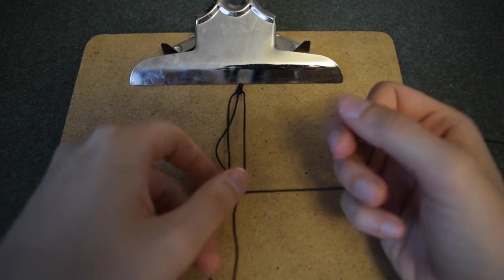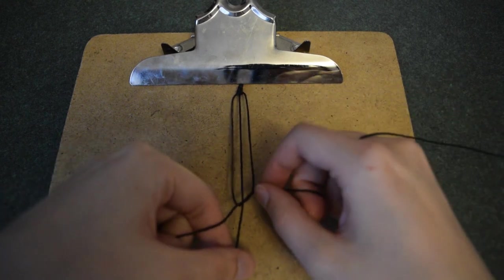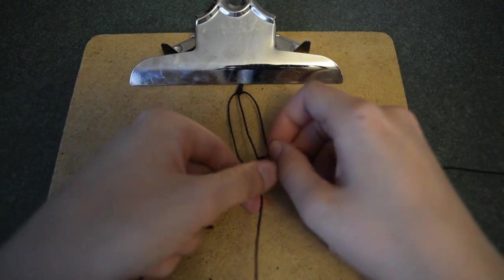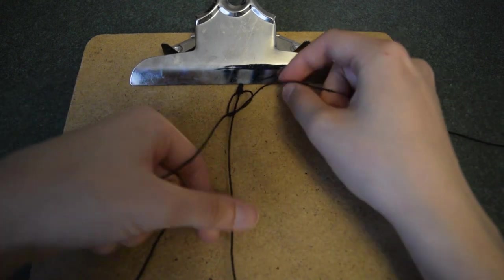If your core string gets caught up in the knot, you can simply give it a gentle pull. While you are knotting, you will want to ensure the knots are pushed up and that the core string is not exposed.